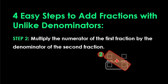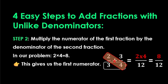Step 2, multiply the numerator of the first fraction by the denominator of the second fraction. In our problem, 2 times 4 equals 8. This gives us the first numerator.